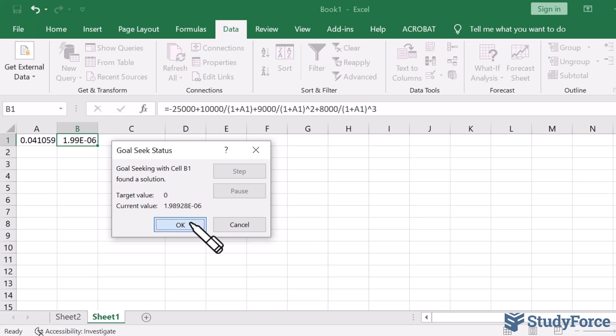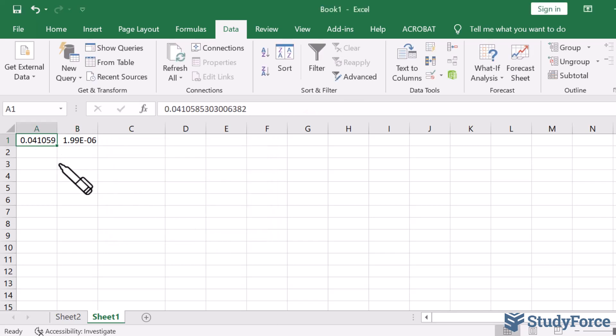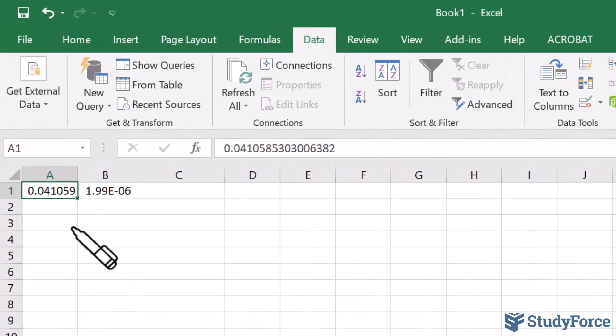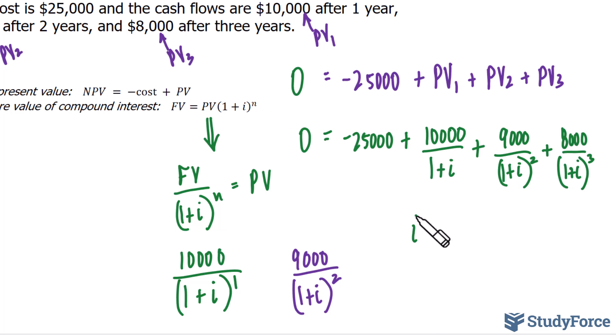Once it's done, press OK, and what you have in this cell is the interest rate, or the IRR. And as you can see, if we multiply this value by 100%, we get 4.1059. So the value of i is roughly 4.1059%. That's the year after year rate of return for this investment.